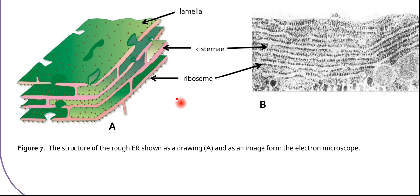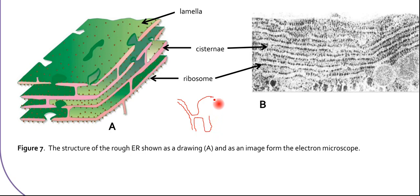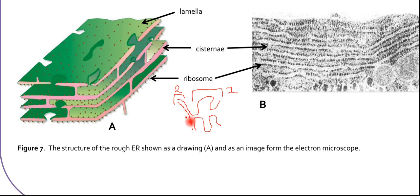When it says it's continuous with the nuclear membrane, remember the nuclear membrane has a double layer — it's a double membrane. It's the outer membrane that forms this rough endoplasmic reticulum. So this point here, point number one, would be the rough endoplasmic reticulum coming out of the nuclear envelope, which is point number two.